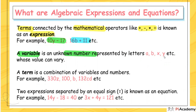A term is a combination of a variable and a number. A variable is an unknown, and by using terms you can create an expression. Examples of terms: 330z, or just 100 (a number alone), or just b (a variable alone) — these all count as terms. There's no condition requiring both a number and variable together; a single number or single variable is also a valid term.